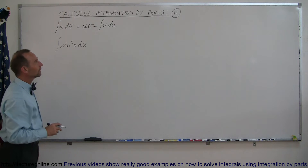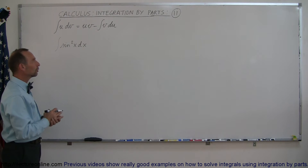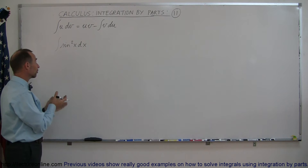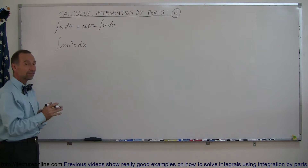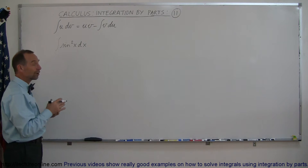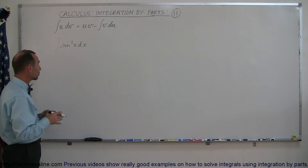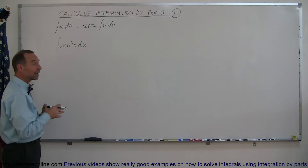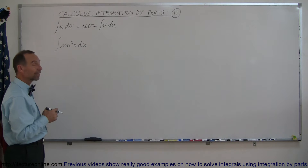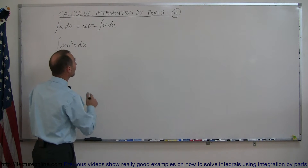Welcome to ElectronLine. Here is example number 11 of how to do integration by parts on something that looks very simple: the integral of sine squared of x dx. But if you don't use integration by parts and a neat little trick, you're going to have a really hard time trying to solve this problem. Alright, let's go ahead and try this.